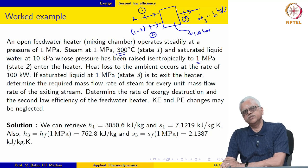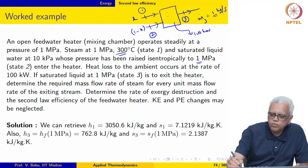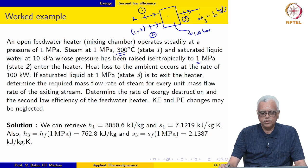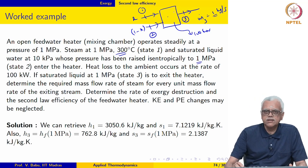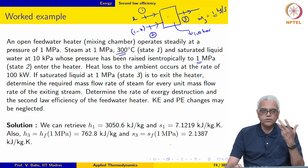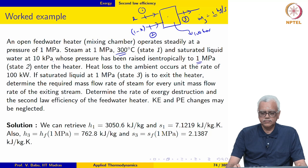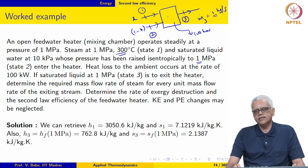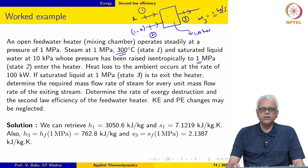In the next module on the Rankine cycle, this device is referred to as a feed water heater rather than a mixing chamber. Although mixing is highly irreversible, this device is still very effective because it heats the stream by mixing rather than by directly adding heat. The water entering at 1 MPa is heated until it leaves as saturated liquid at 1 MPa, reducing the external irreversibility associated with heat addition and increasing the overall efficiency of the plant.